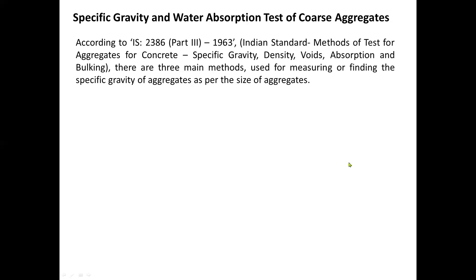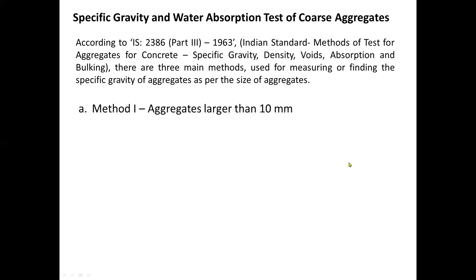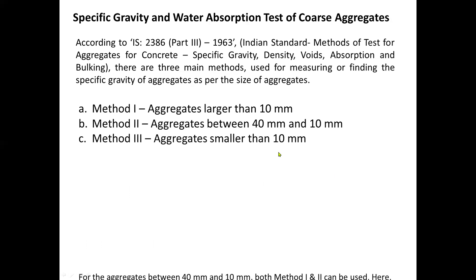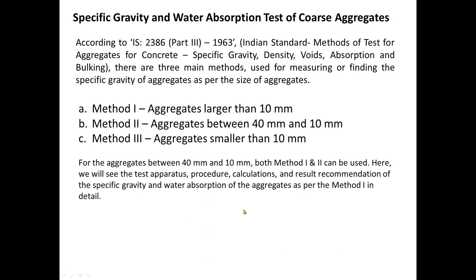There are three main methods used for measuring the specific gravity of aggregates as per their size. Method 1 is for aggregates larger than 10 mm. Method 2 is used for aggregates between 10 and 40 mm. Method 3 is used for aggregates smaller than 10 mm. For aggregates between 10 and 40 mm, both Method 1 and Method 2 can be used. Here, we will see the test apparatus, procedure, calculations, and result recommendations of specific gravity and water absorption of aggregates as per Method 1 in detail.